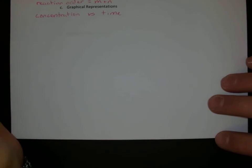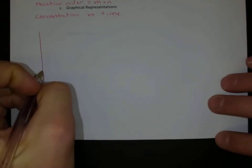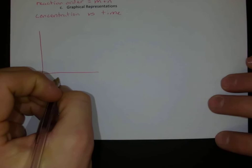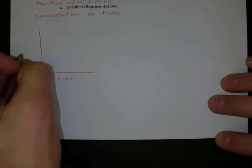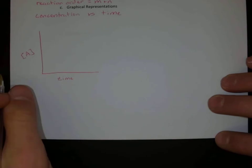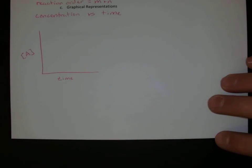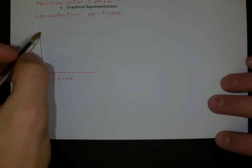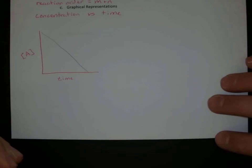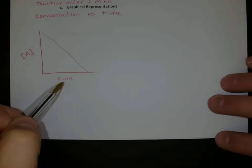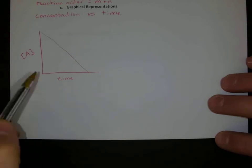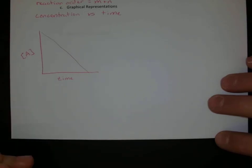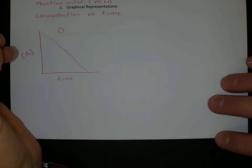So if we have just a graph, we would put time on the bottom because we're going to have a reaction occurring, and the concentration of some species — concentration of A. And if I end up with a linear change, our concentration is going down as time changes as the reaction proceeds, that's going to indicate that my reaction is zero order.